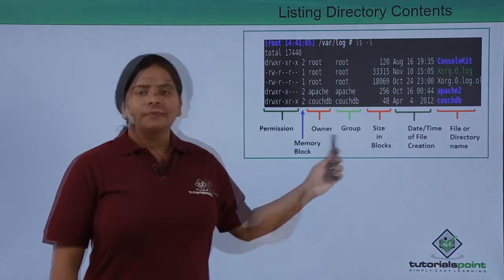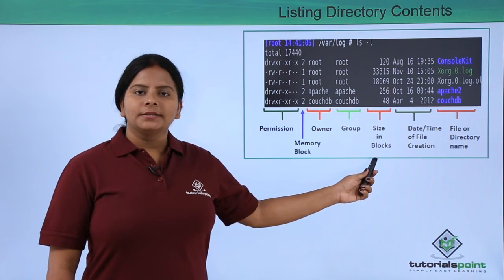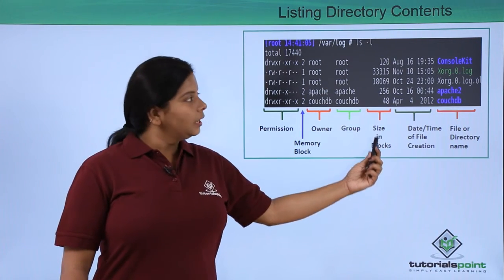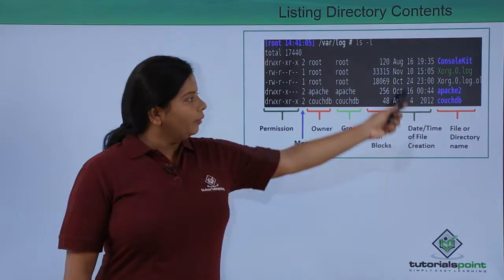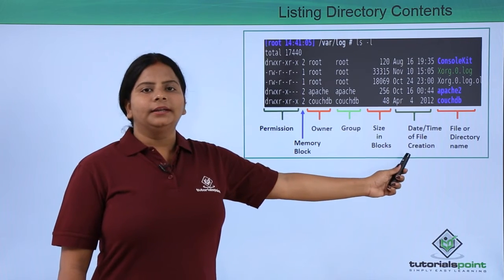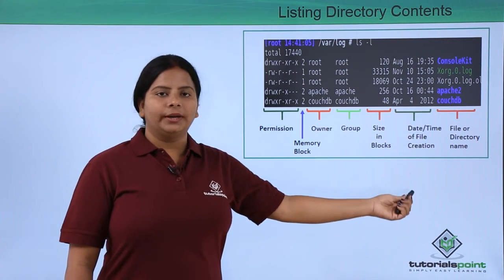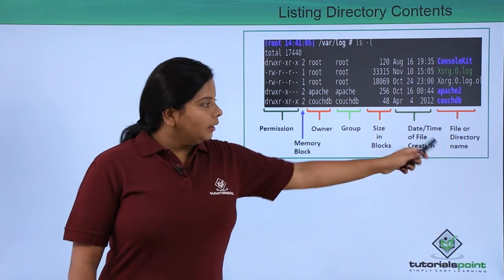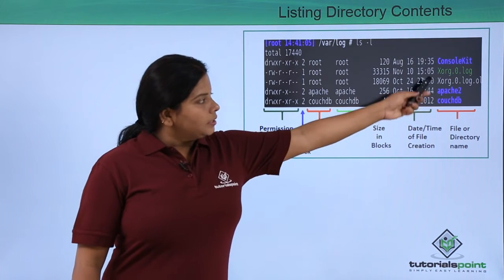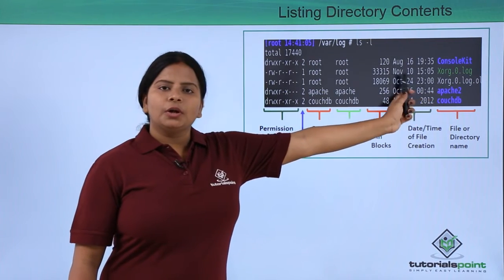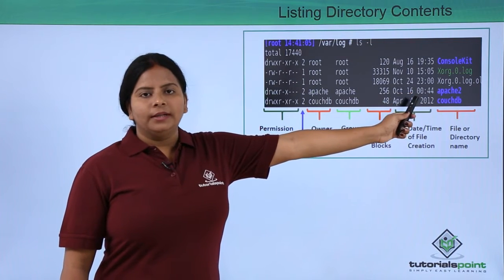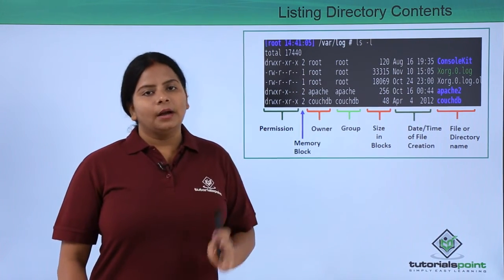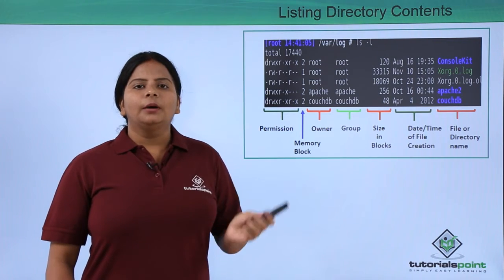Next is size in blocks, showing data in bytes — not megabytes or gigabytes — so you need to calculate accordingly. Then there is a column showing the date and time the file was created, and also when the file or directory was last modified. The last column is the file or directory name. White color indicates ordinary files, green indicates log files which are a kind of special file, and blue indicates directories.